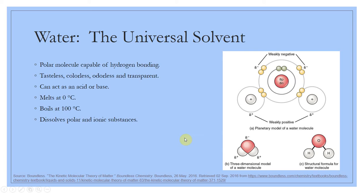Water can also use its lone pairs of electrons to accept protons and therefore act as a base. So we have a really unique molecule. It has a huge temperature range where it can remain as a liquid phase — melting to boiling is a 100-degree difference, which is pretty huge. Because of its really large polarity and hydrogen bonding, it can actually dissolve either polar or ionic substances. It doesn't have to interact with one type the way other solvents would.